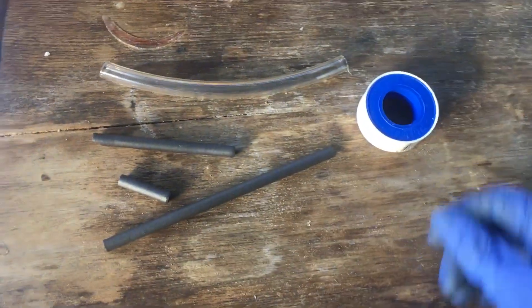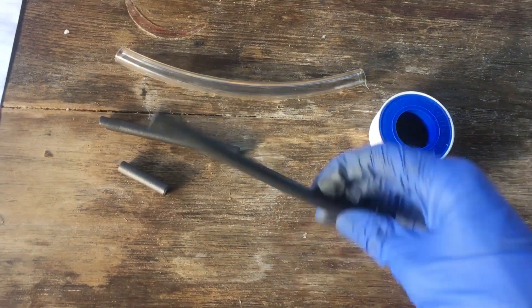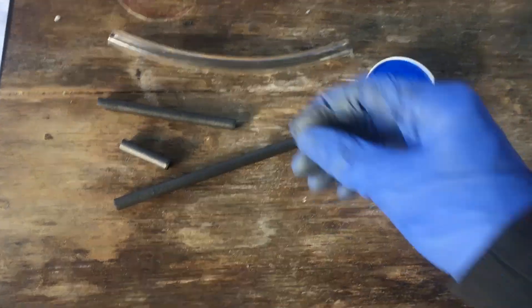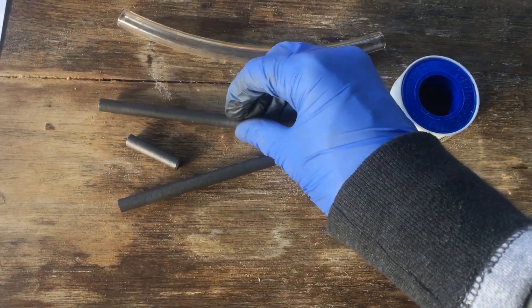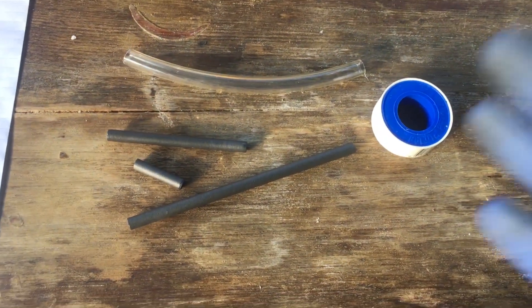Today what we're going to be attempting to do in this nice short video is turning some carbon rods, these graphite gouging rods for welding or something, we're going to attempt to turn these into very simple gas diffusion electrodes for electrochemistry. I'll show you what I mean.